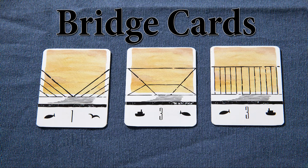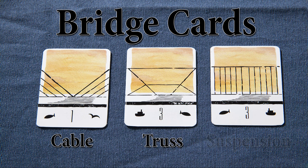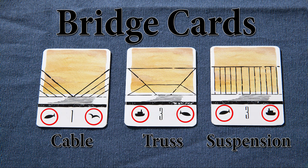There are three types of bridge cards: cable, truss, and suspension. Each card has a point value and a pair of symbols at the bottom used to score.